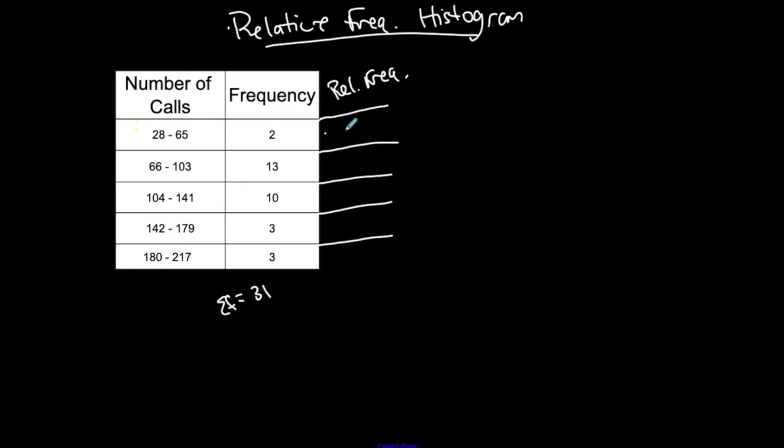So I'm going to take 2 out of 31 and change it to a percentage. So what did we say? 6.5-ish, rounded to the nearest tenth of a percent. 6.5% for my first relative frequency.